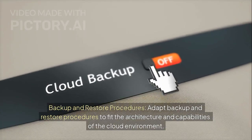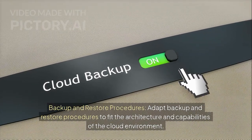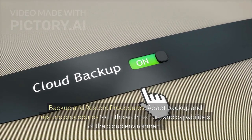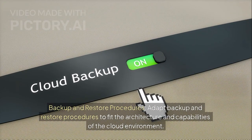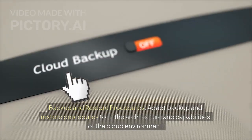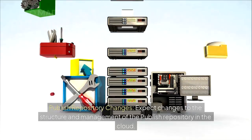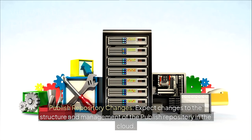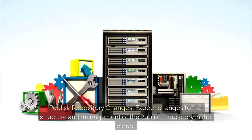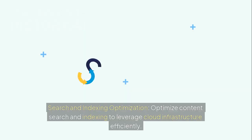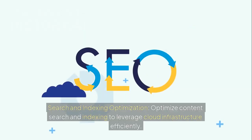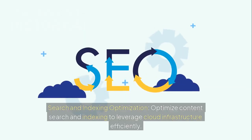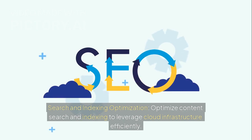6. Backup and restore procedures — adapt backup and restore procedures to fit the architecture and capabilities of the cloud environment. 7. Publish repository changes — expect changes to the structure and management of the publish repository in the cloud. 8. Search and indexing optimization — optimize content search and indexing to leverage cloud infrastructure efficiently.